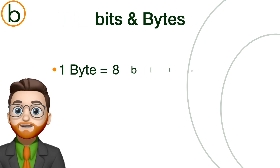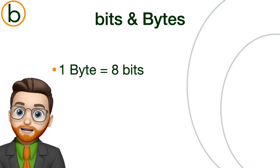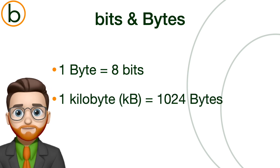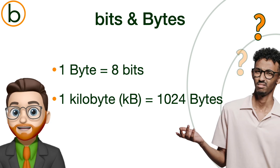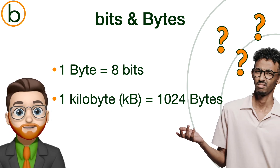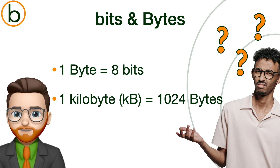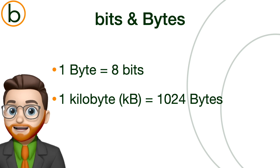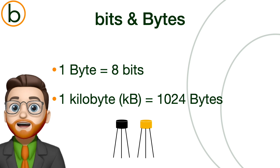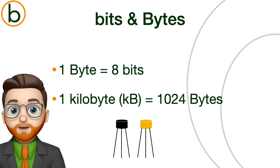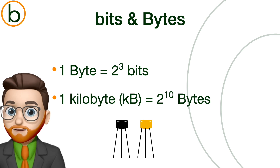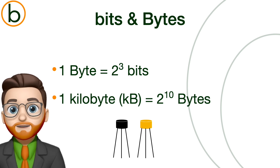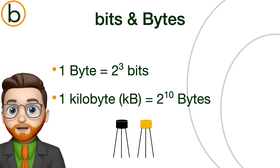One byte consists of 8 bits. One kilobyte is 1024 bytes. Now you might be thinking — 1024, that's a very weird number. A kilometer is just 1000 meters, right, and not 1024. So why is this different when it comes to computers? That's because of the two possible values a bit can have. Computers are binary systems, so we always work with powers of 2. 2 to the 10th is 1024, not 1000. That's why in computing, 1 kilobyte is defined as 1024 bytes. So everything comes down to how computers store data — always in blocks that are powers of 2.